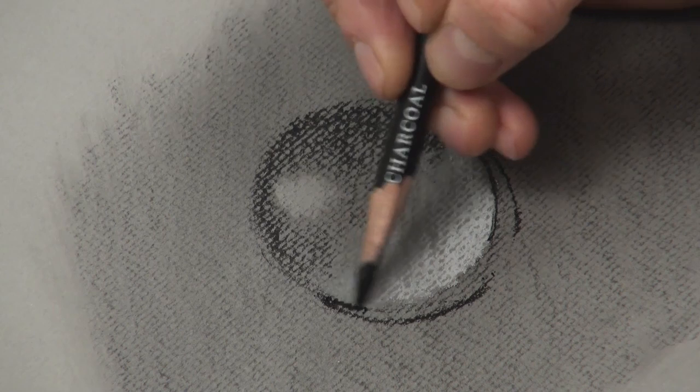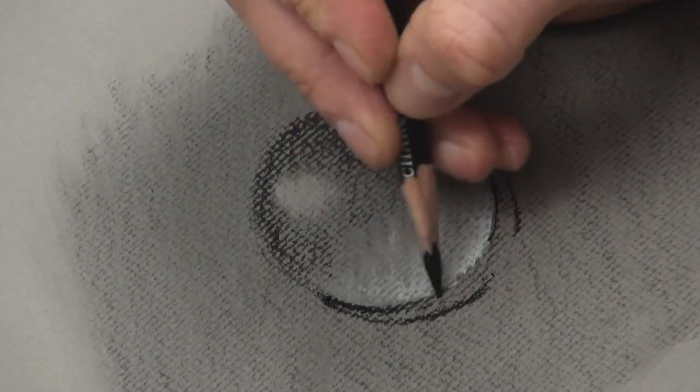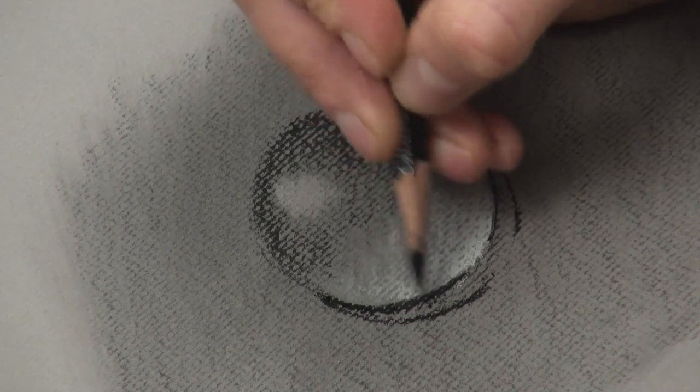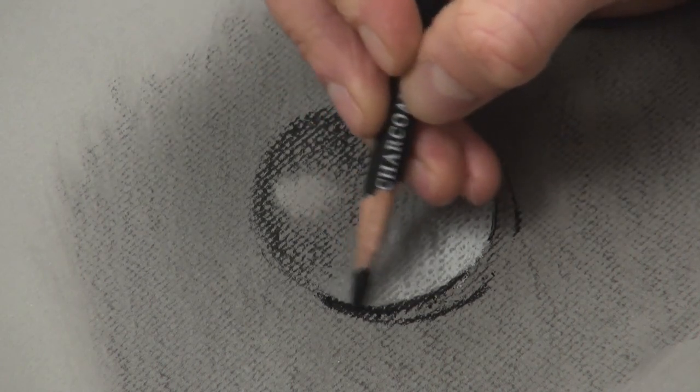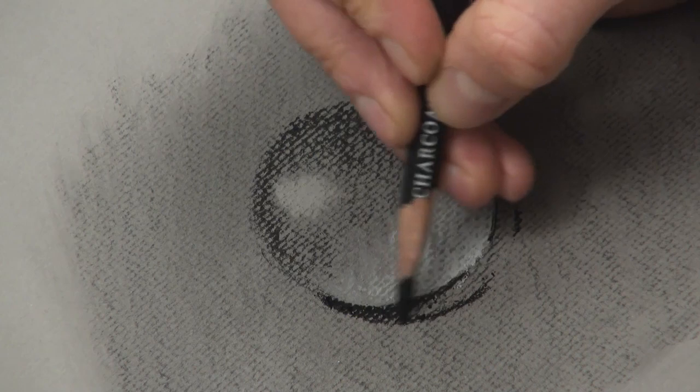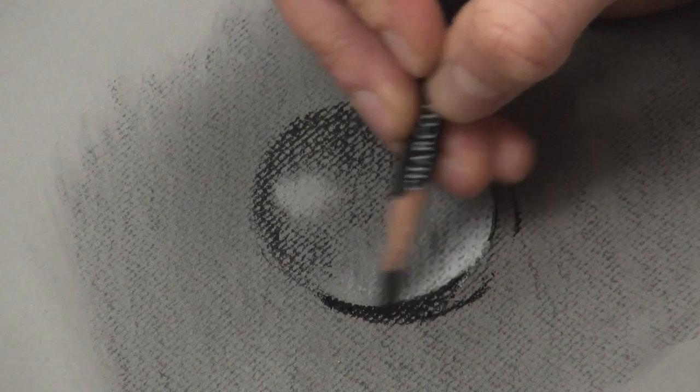And then remember with a cast shadow, you want it darkest right underneath the object and then it gradually, only slightly but gradually softens off as the shadow gets further away.